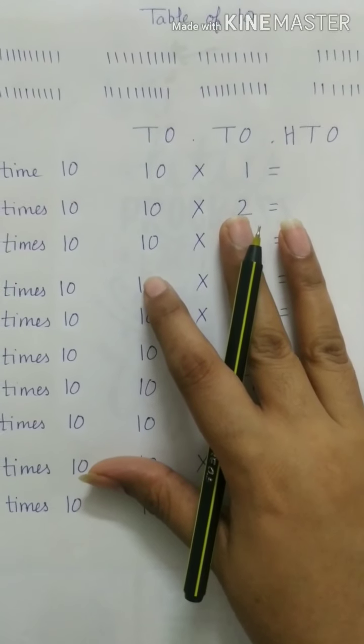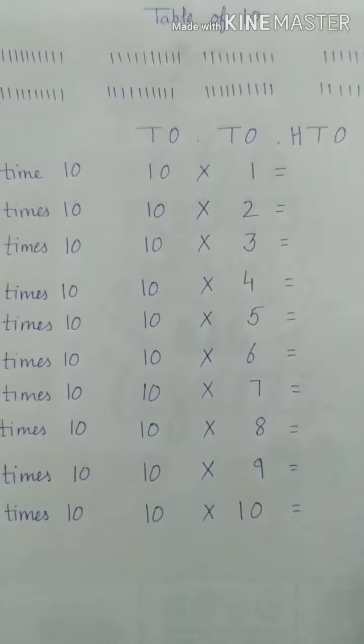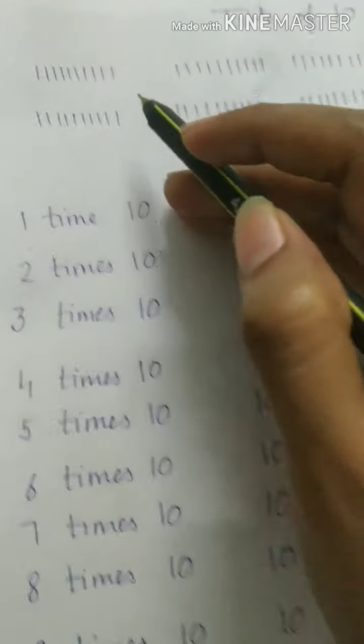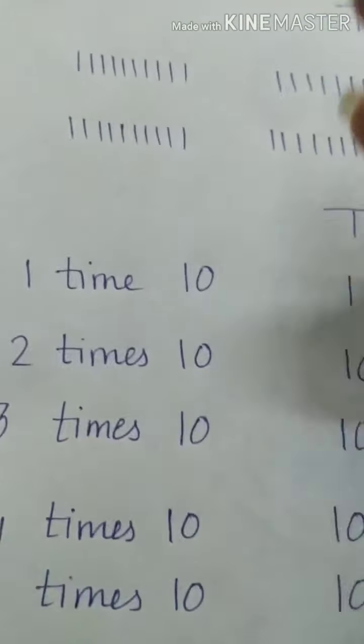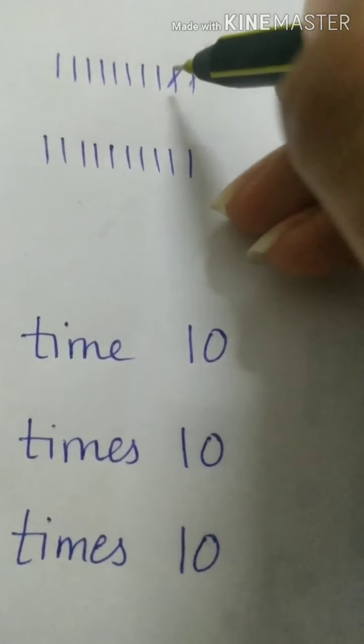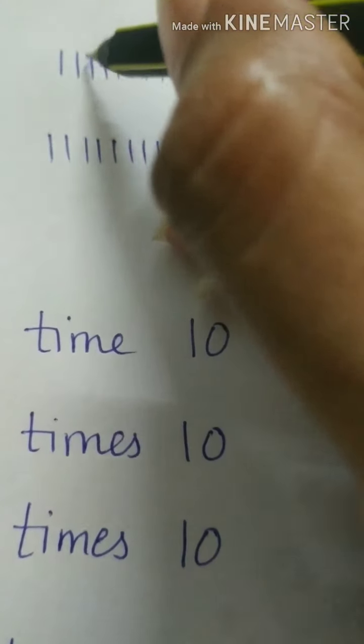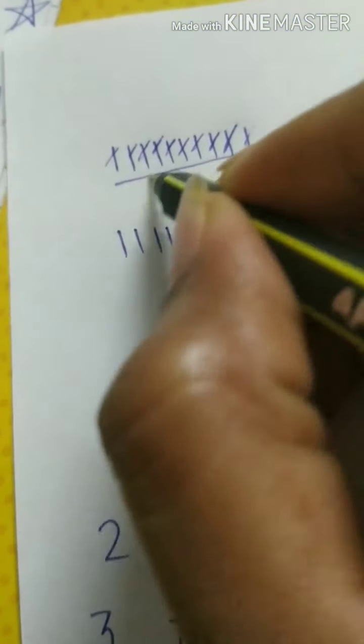Let's do the easiest table that is table of 10 which is very very easy. See I have marked here few vertical lines. Let's count one set. This is 1, 2, 3, 4, 5, 6, 7, 8, 9 and 10. Alright. So this is the first set of 10 vertical lines.